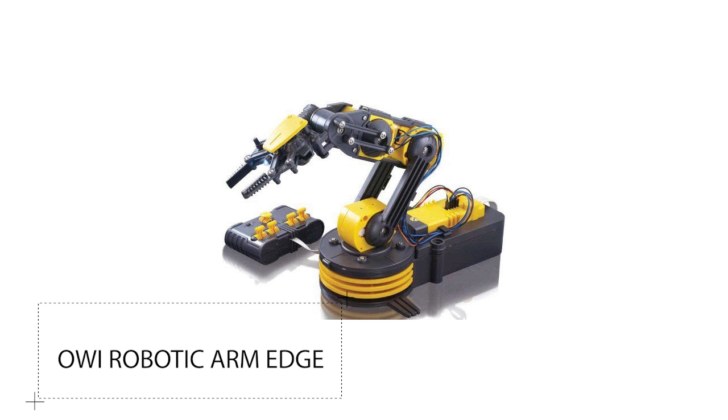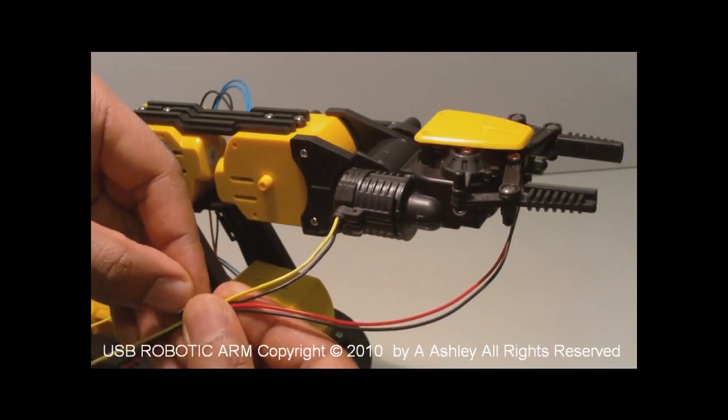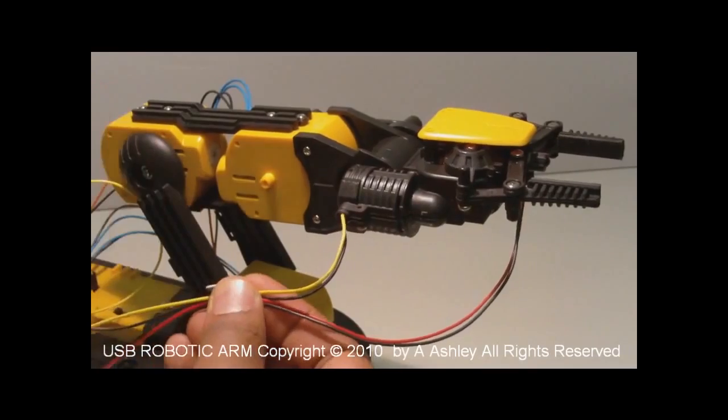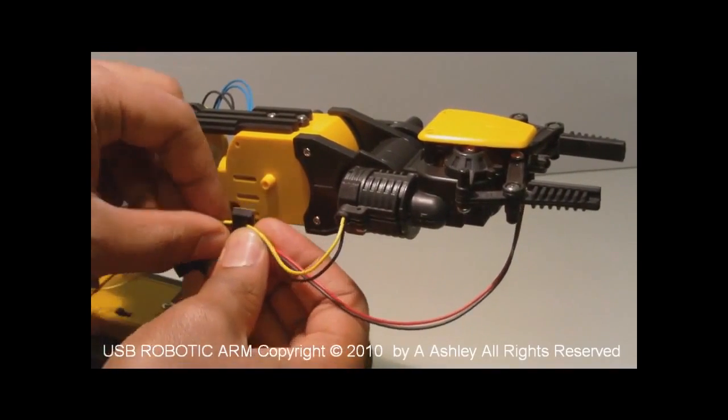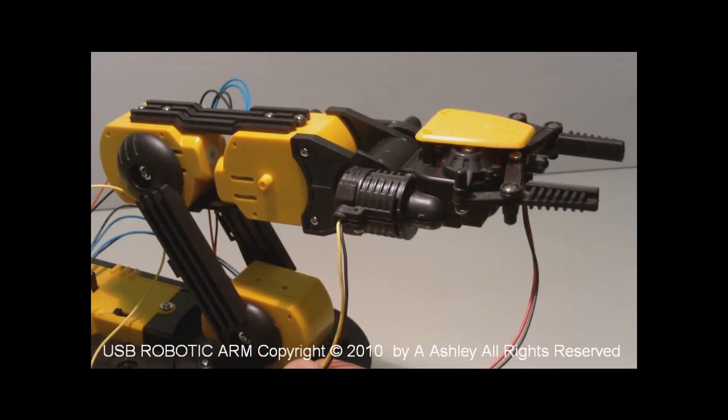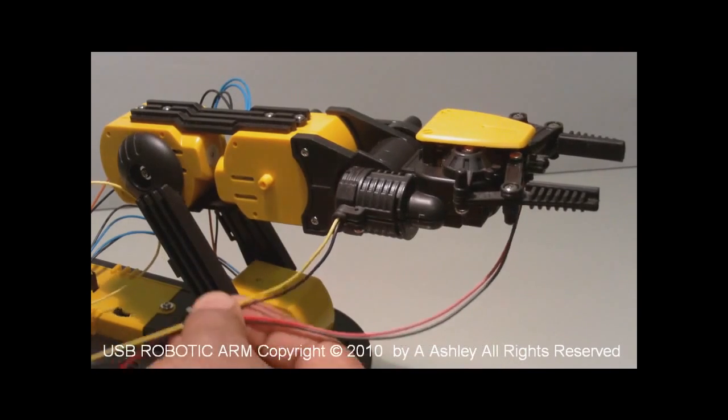Number three, the OWI Robotic Arm Edge. OWI has made robotic arm technology more affordable without compromising quality. The arm has a lifting capacity of 100 grams and you can command the grabber to open and close.